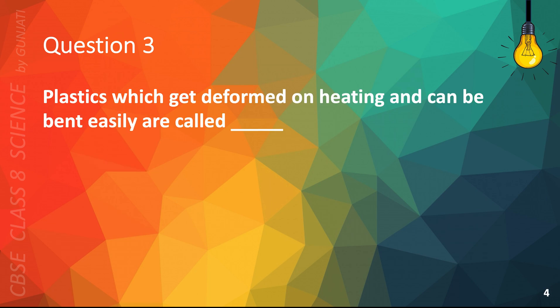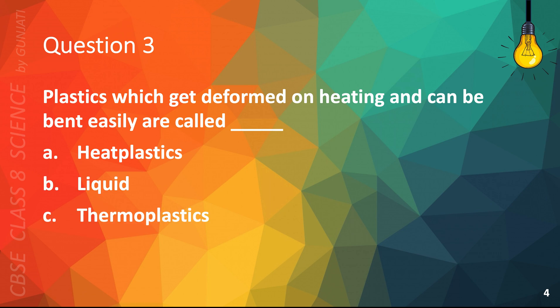Question 3. Plastics which get deformed on heating and can be bent easily are called A. Heat plastics, B. Liquid, C. Thermoplastics, or D. Cold. The correct answer is C. Thermoplastics.